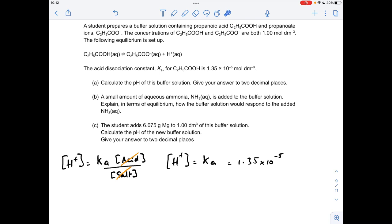So we've got the Ka value for the propanoic acid, 1.35 times 10 to the minus 5, so that's the H plus concentration as well. All we need to do now is minus log that to get the pH. So to two decimal places, that comes out at a pH of 4.87.